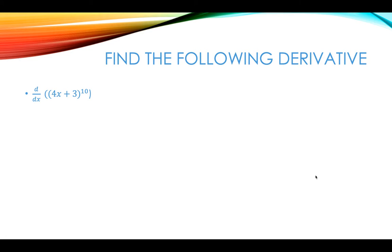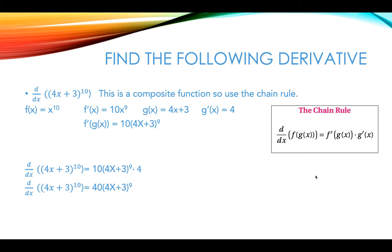We're going to find the derivative of (4x plus 3) to the tenth power. It's a composite function so we're going to use the chain rule. f of x is x to the tenth, so the derivative of f of x is going to be 10 times x to the ninth using the power rule. And then g of x is 4x plus 3. The derivative of 3 is 0, the derivative of 4x is 4.